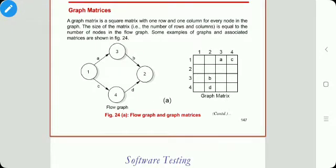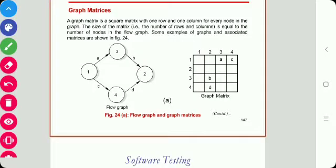A graph matrix is a square matrix with one row and one column for every node in the graph. The size of the matrix, meaning the number of rows and columns, is equal to the number of nodes. See this example: there are four nodes, so the matrix is four by four with four columns and four rows.